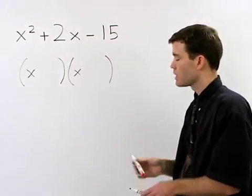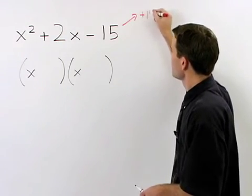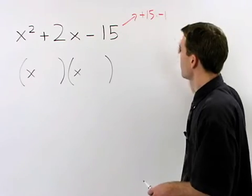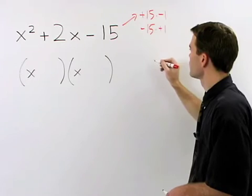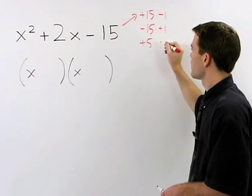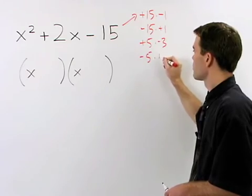So this negative 15 can be thought of as positive 15 times negative 1, negative 15 times positive 1, positive 5 times negative 3, or negative 5 times positive 3.